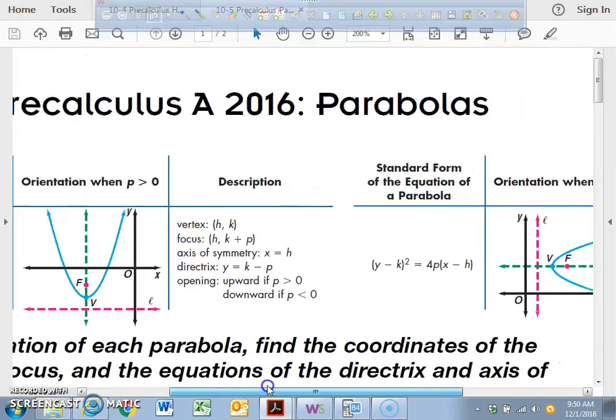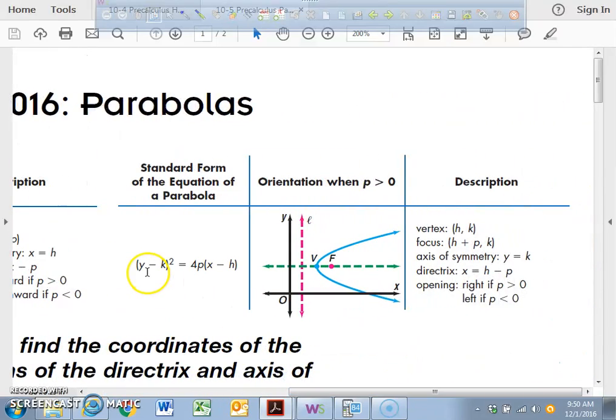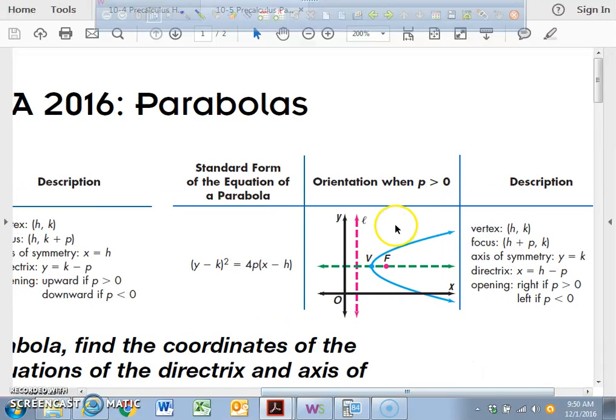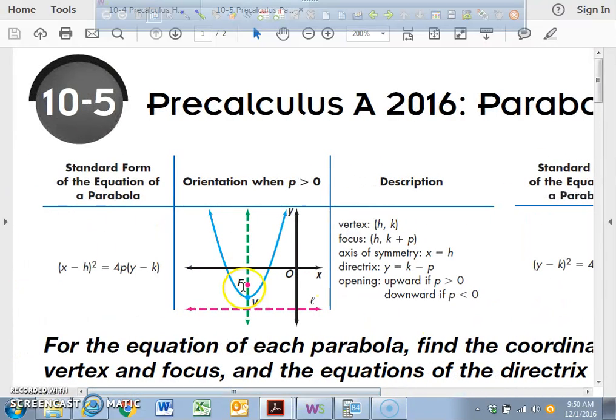Whereas over here, look at this formula. The y's are going to be squared over here, and that's going to either open up to the right or it can also open up to the left. So this right here, everybody, this technically would not be considered to be a function. It's an equation, but it's not a function because it does not pass the vertical line test. Over here, this is a function.